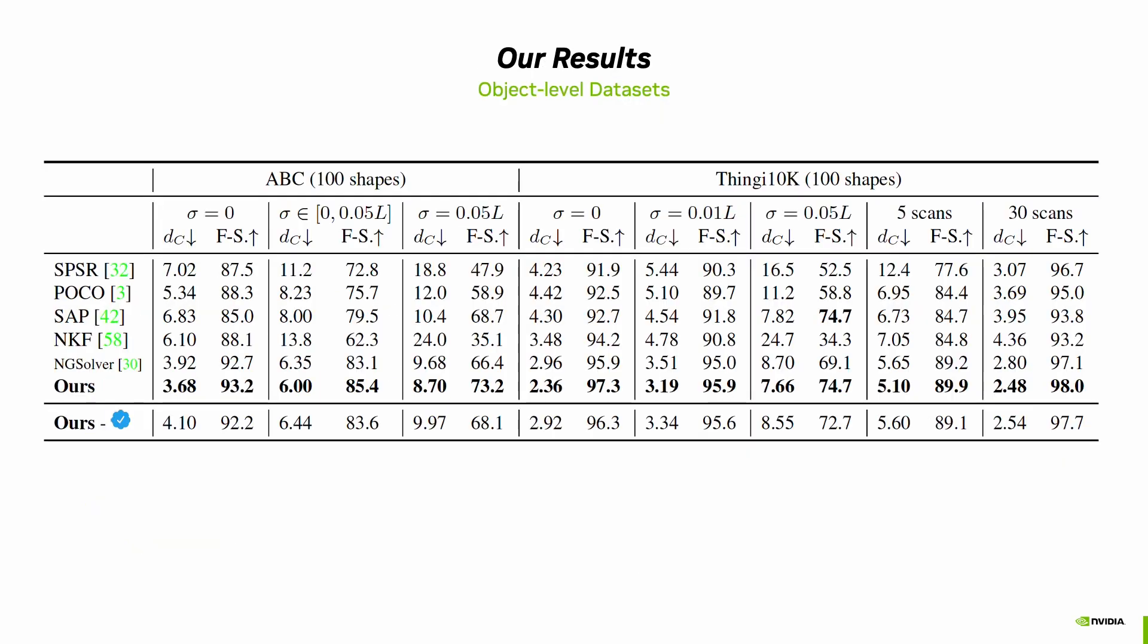We then show our results. For object-level datasets, like ABC dataset and Thingy10k dataset, our model is able to outperform all previous baselines in terms of both chamfer distance and F-score. Note that to make our model widely applicable, we additionally introduce a kitchen sink model, which is trained on the mixture of various datasets including ShapeNet, Matterport3D, and CARLA. The kitchen sink model is able to perform decently on object-level datasets, as well as other datasets that I will show later, demonstrating the good generalization of NKSR.